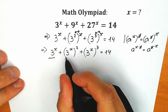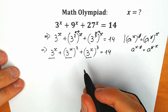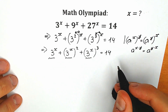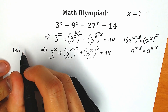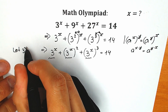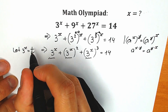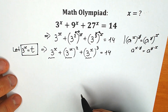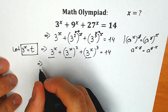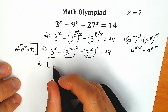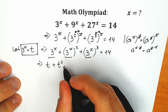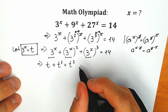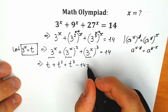3 to the x, 3 to the x, and 3 to the x are all the same expression, so we can write a substitution for better understanding. Let 3 to the power x equal t. As a result, our equation looks like: t plus t squared plus t cubed minus 14 equals zero.